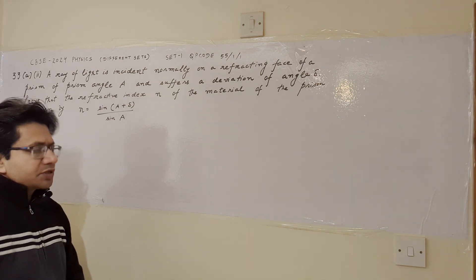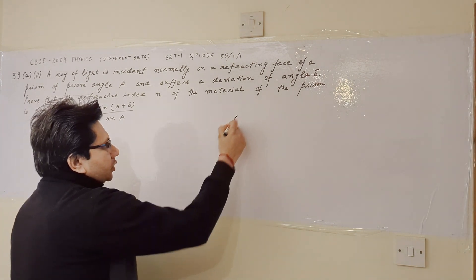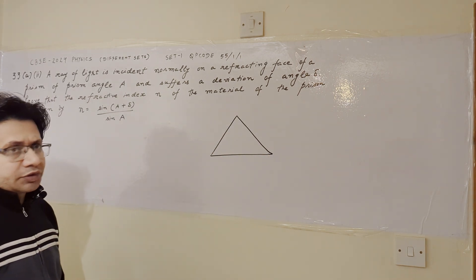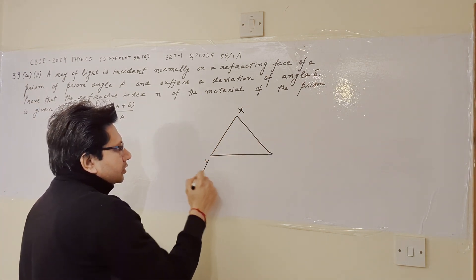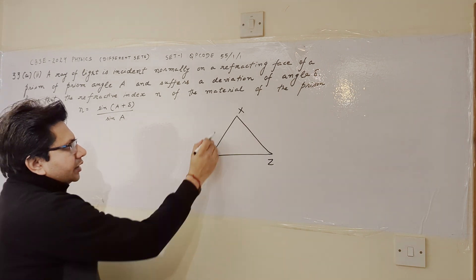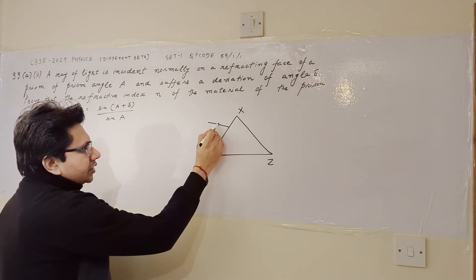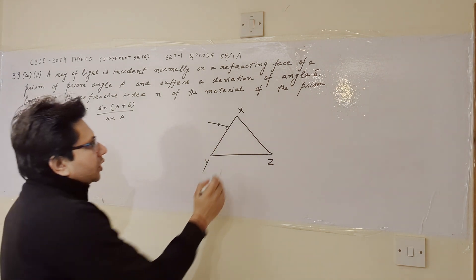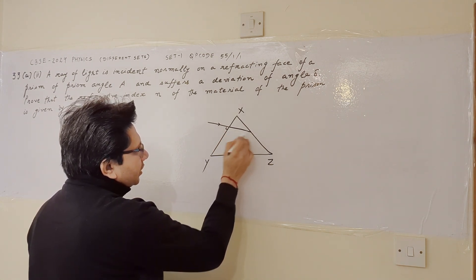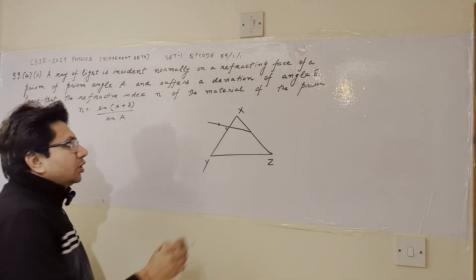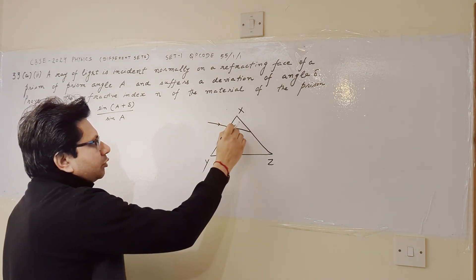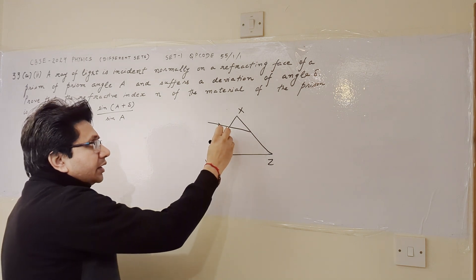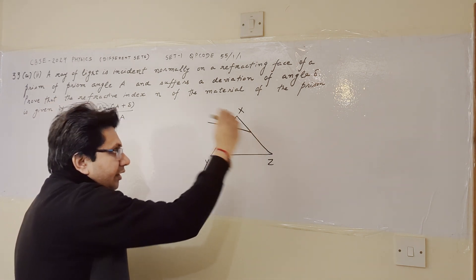This problem is based on the topic of prism, specifically a situation where the ray strikes normally — making an angle of 90 degrees with one of its surfaces. When a ray enters a medium at 90 degrees (i.e., along the normal), it does not deviate. This is a general rule: a ray entering at 90 degrees passes straight through without bending, so the ray continues in the same direction inside the prism.